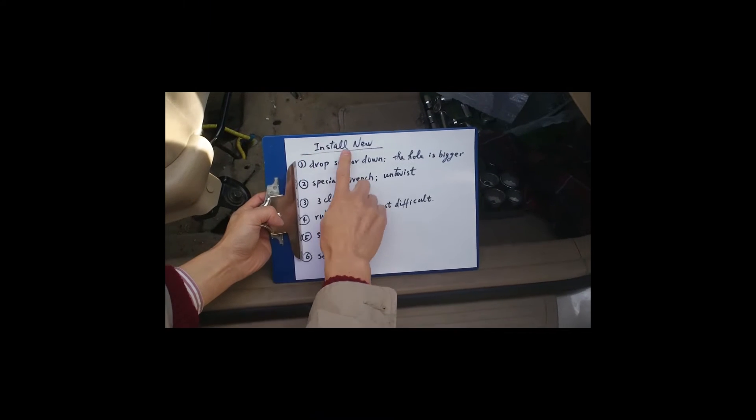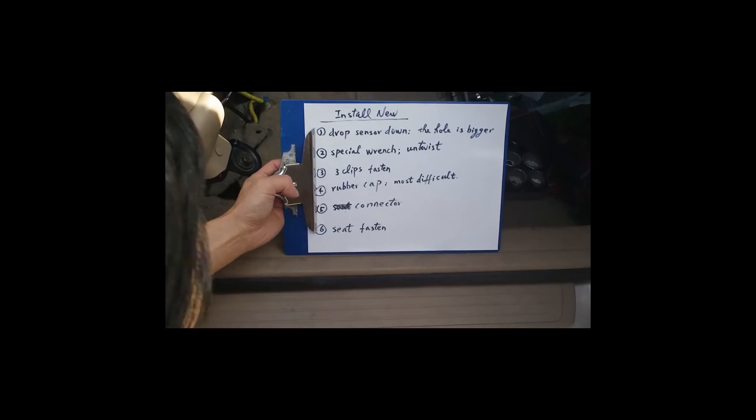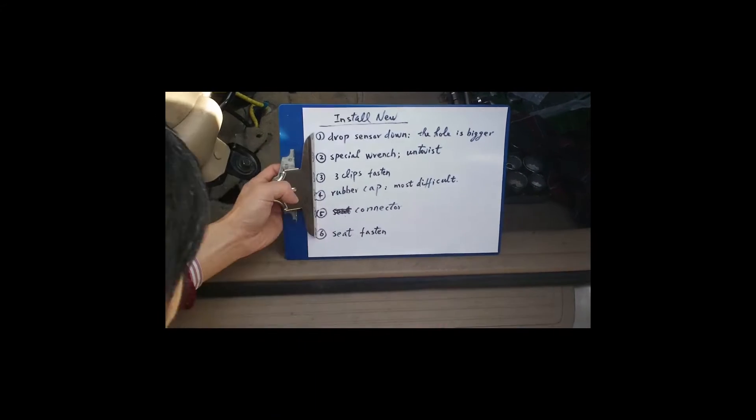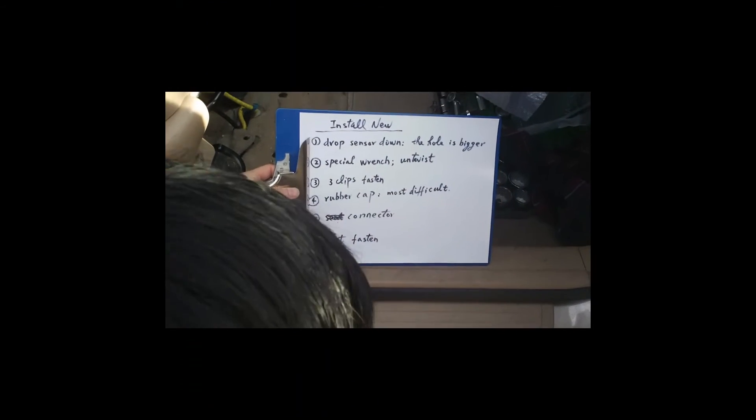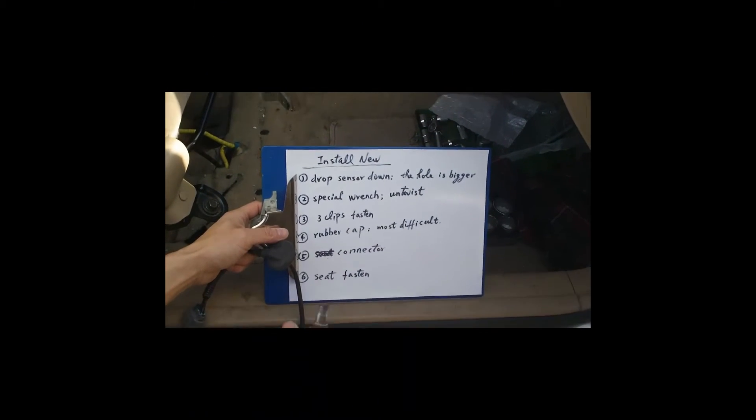These six steps are to install the new. The first step, remember there's a big hole here. You need to do the reverse. Drop the new sensor down. You drop the whole thing from the top. For the new oxygen sensor. So this is the new oxygen sensor. I'm going to put it in. So I will pull it out from under below.